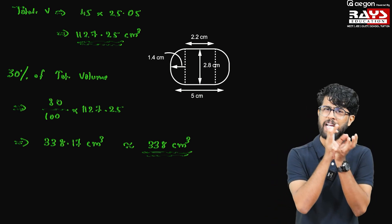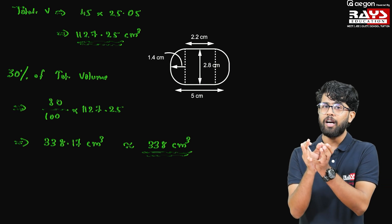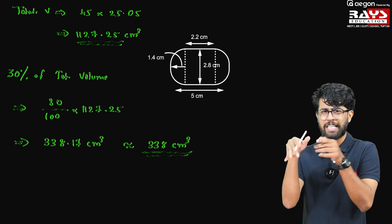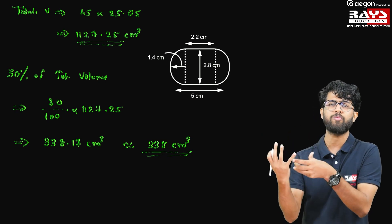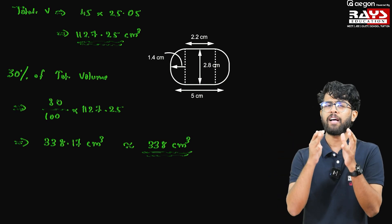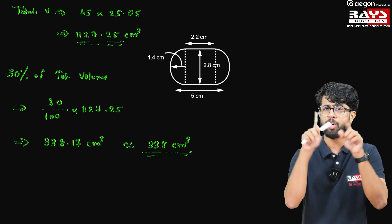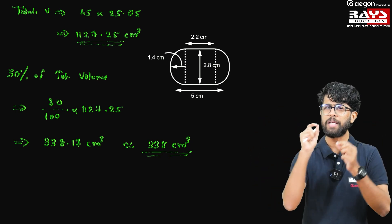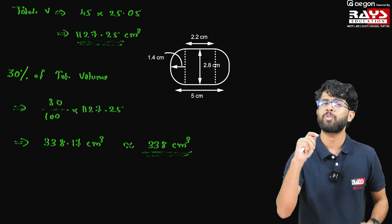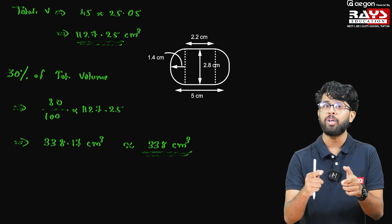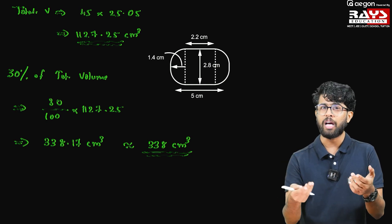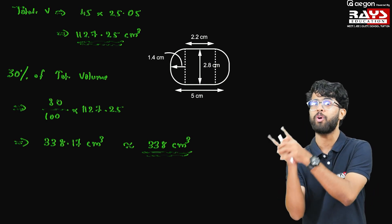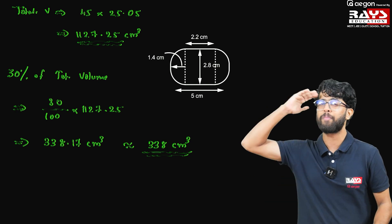This is how we can easily solve the Gulab Jamun problem. It is mostly expected because in 2019 a question of similar type was asked, so a Gulab Jamun question may be asked this year too. Please divide the whole solid shape into three parts — one cylinder and two hemispheres at both ends — and do the calculations carefully. Please stay tuned for more videos. If you like the video, hit the like button, subscribe, and share with your friends. See you in the next video. Bye-bye, take care.